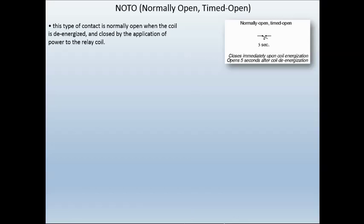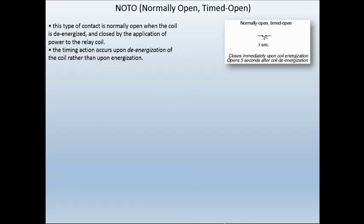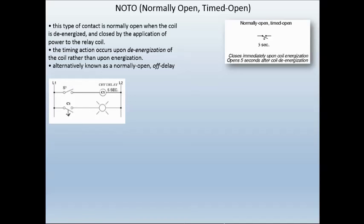Now we have a normally open timed open. Here's the symbol for the normally open timed open. This type of contact is normally open when the coil is de-energized, and closed by the application of power to the relay coil. The timing action occurs upon de-energization of the coil rather than upon energization. This is alternately known as a normally open off delay.